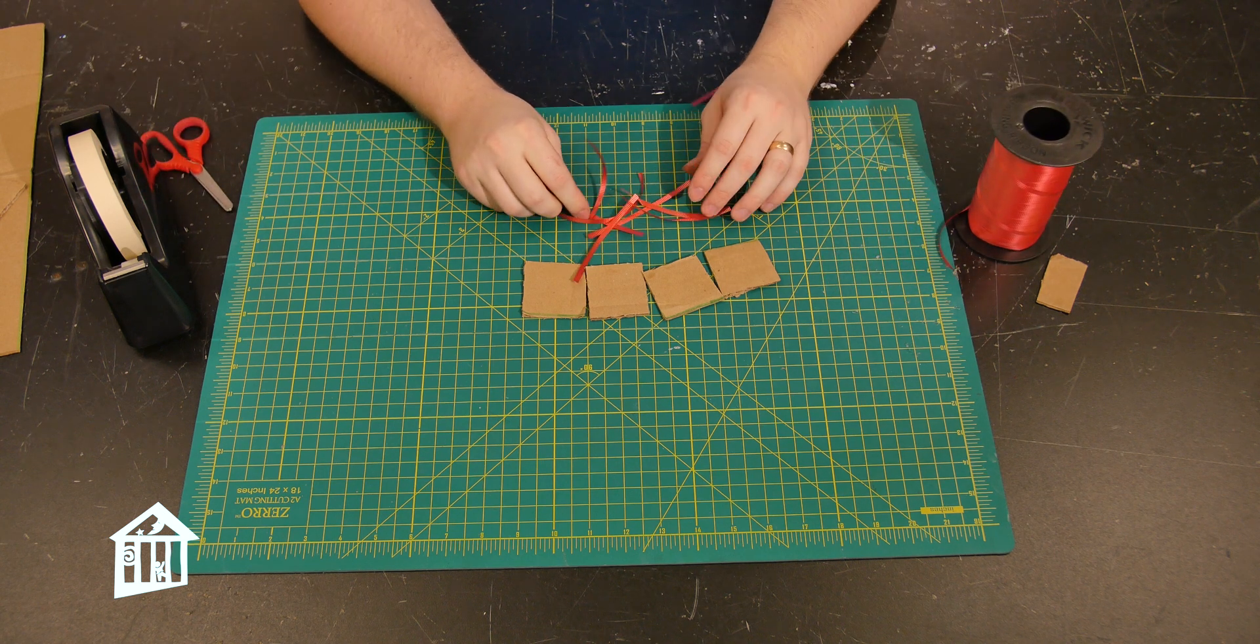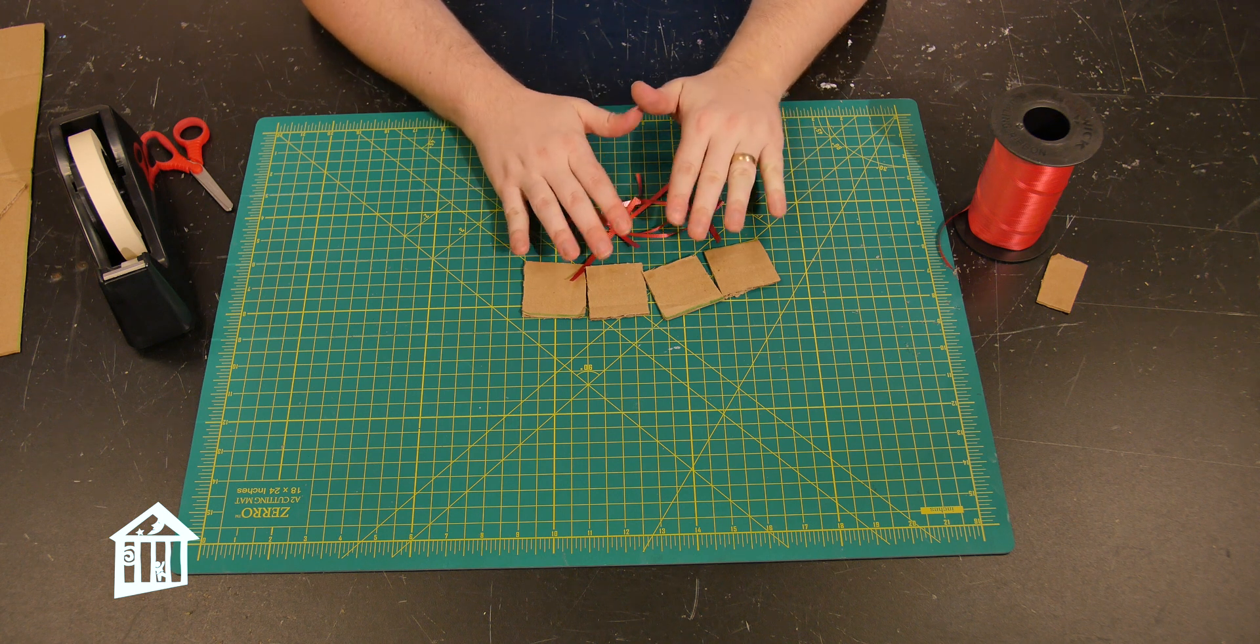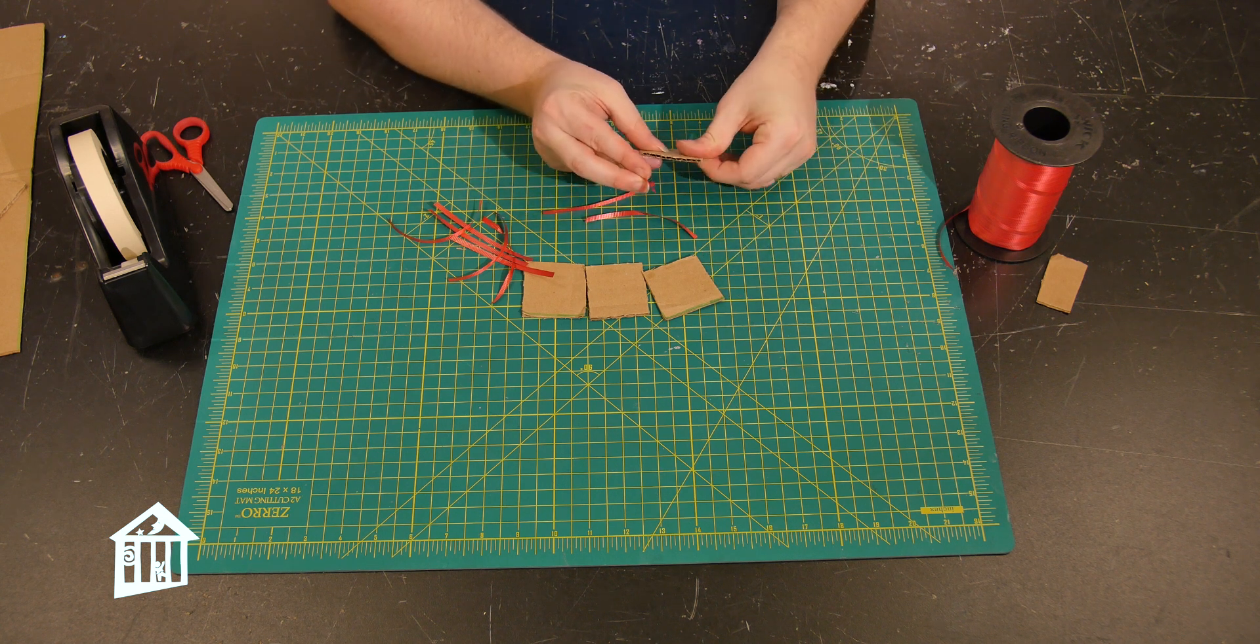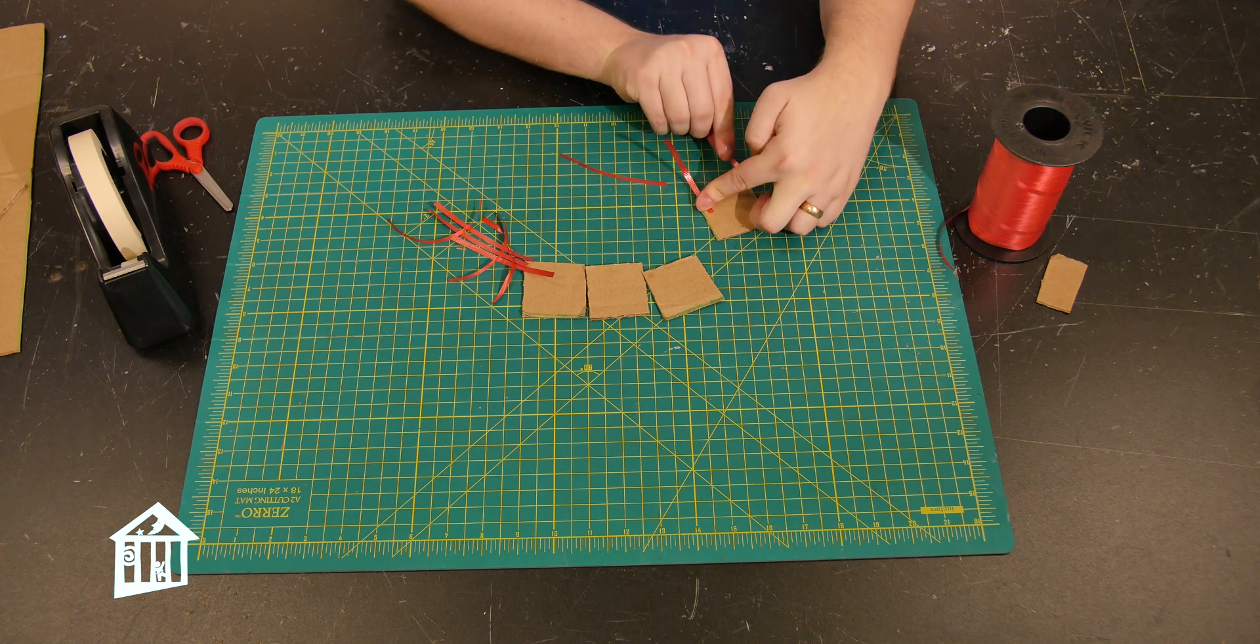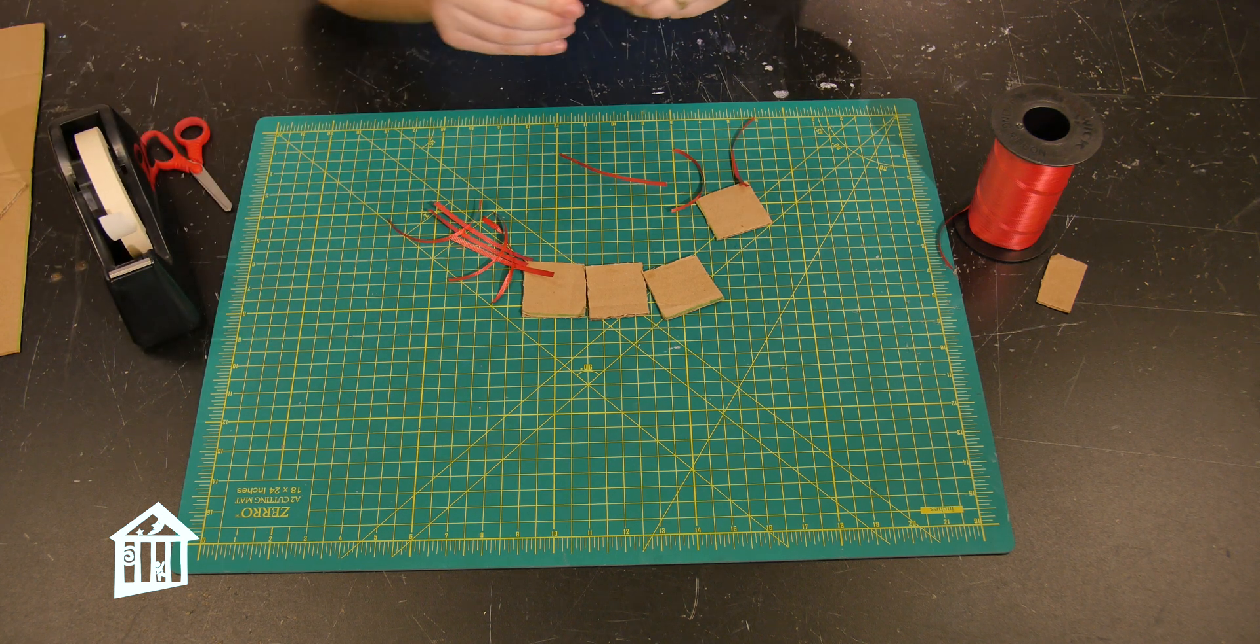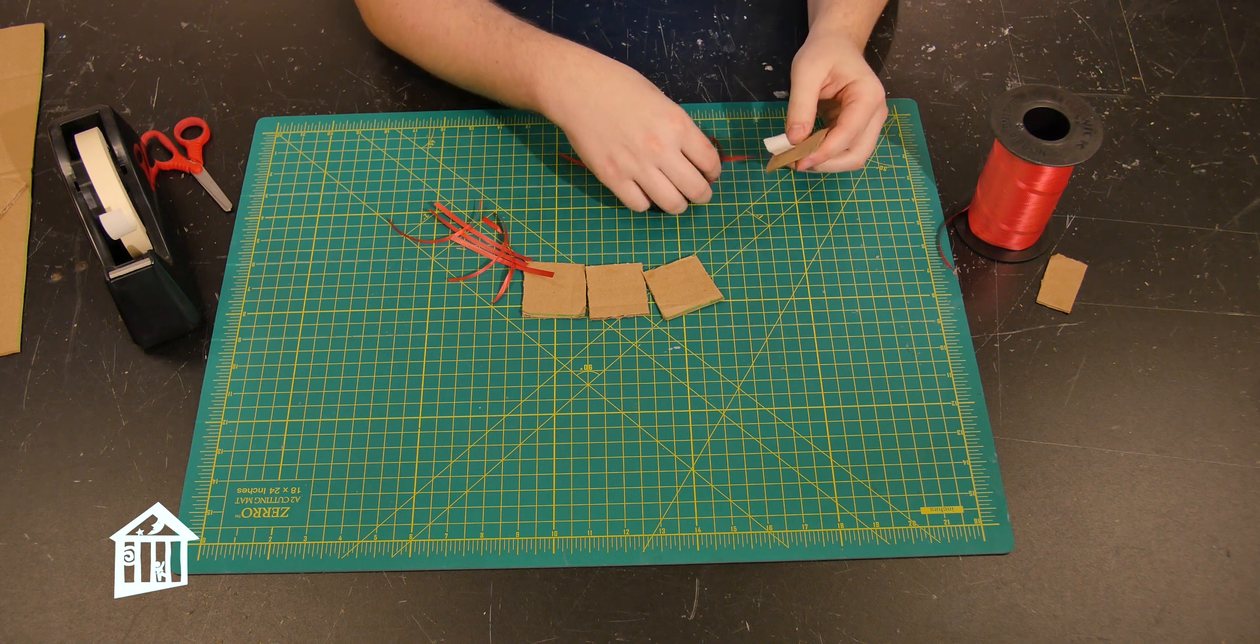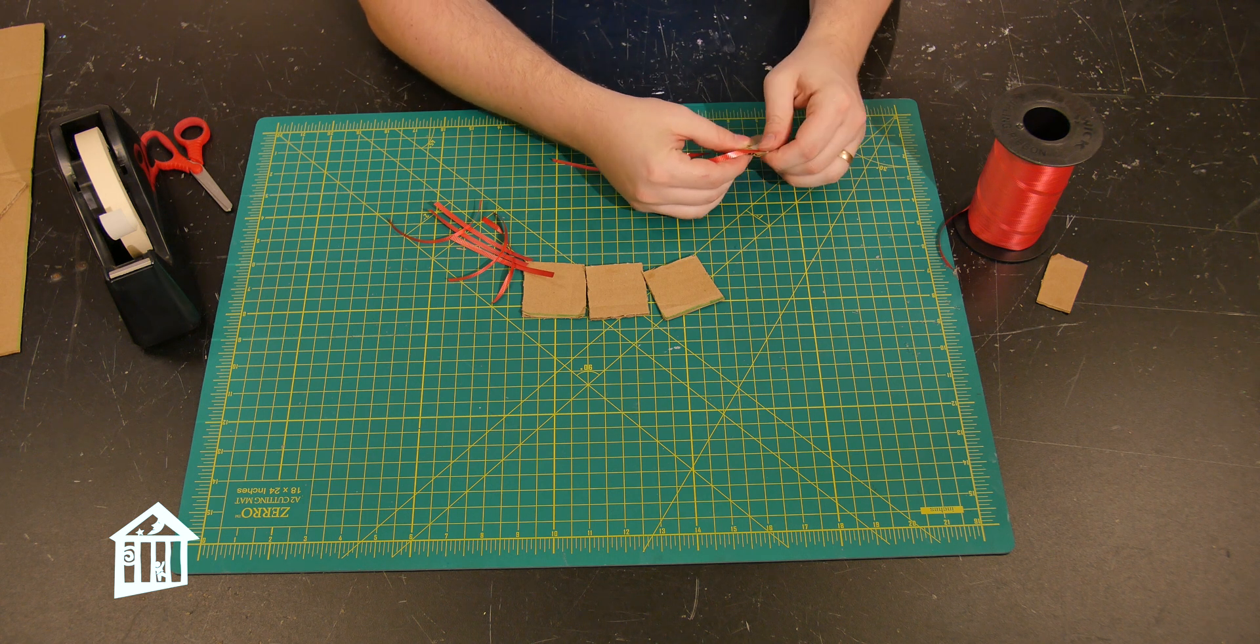So we have nine pieces of ribbon. We have four cardboard squares. And what you're going to do is tape two on one side of the square, kind of like this. So you'll take the tape and tape one on this side. And then you'll make sure you also tape one on this side, just like that.